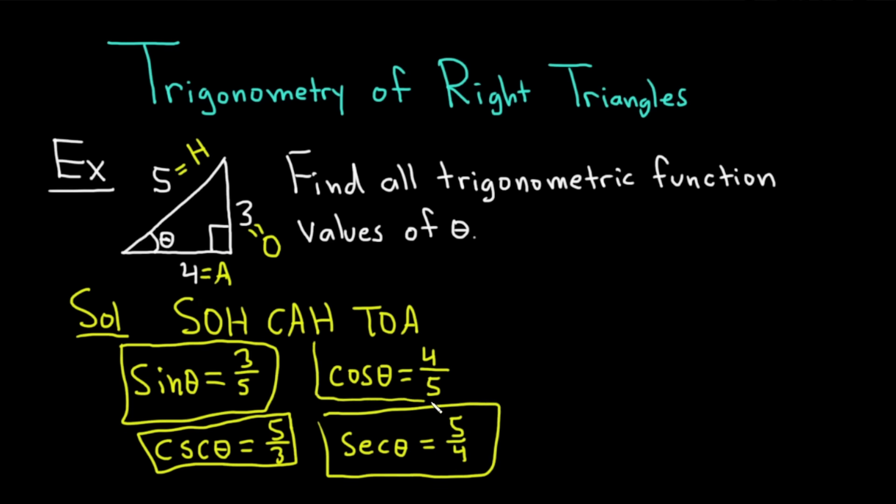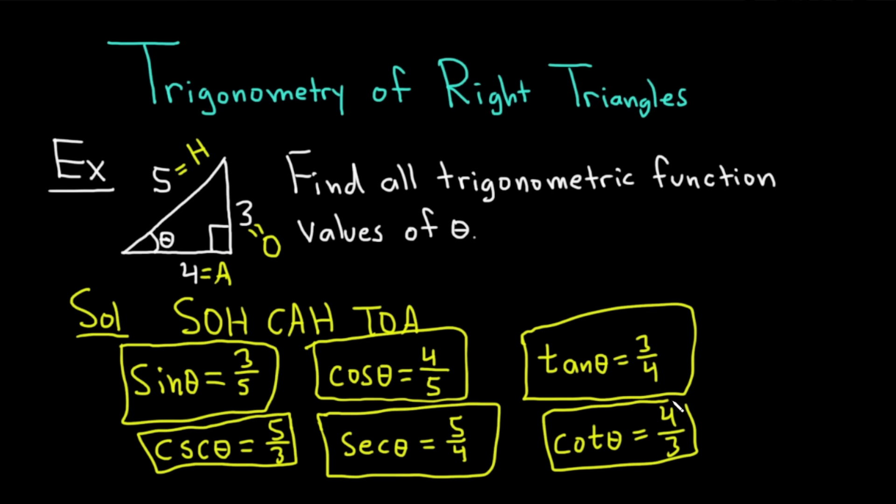Very powerful, SOH CAH TOA lets you do a lot of trig problems. And then we have the tangent of theta, which is opposite over adjacent, so that'll be 3 over 4. That's another answer there. And last and certainly not least, the cotangent of theta is the reciprocal of tangent, so you just flip it, so you get 4 over 3. And those are all the trig function values of theta.